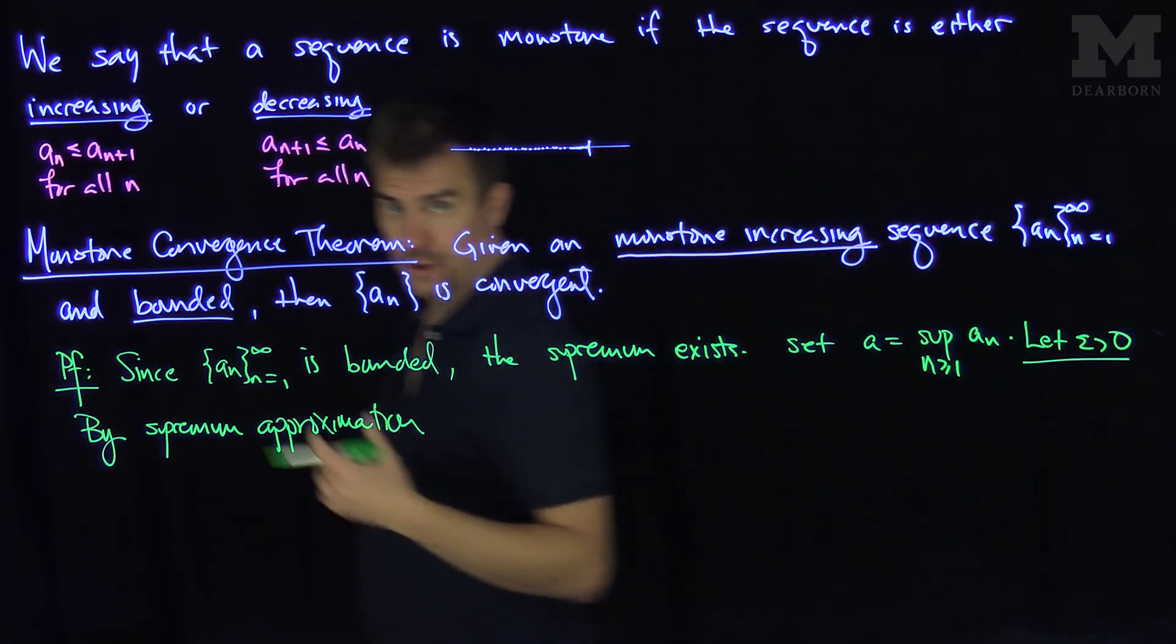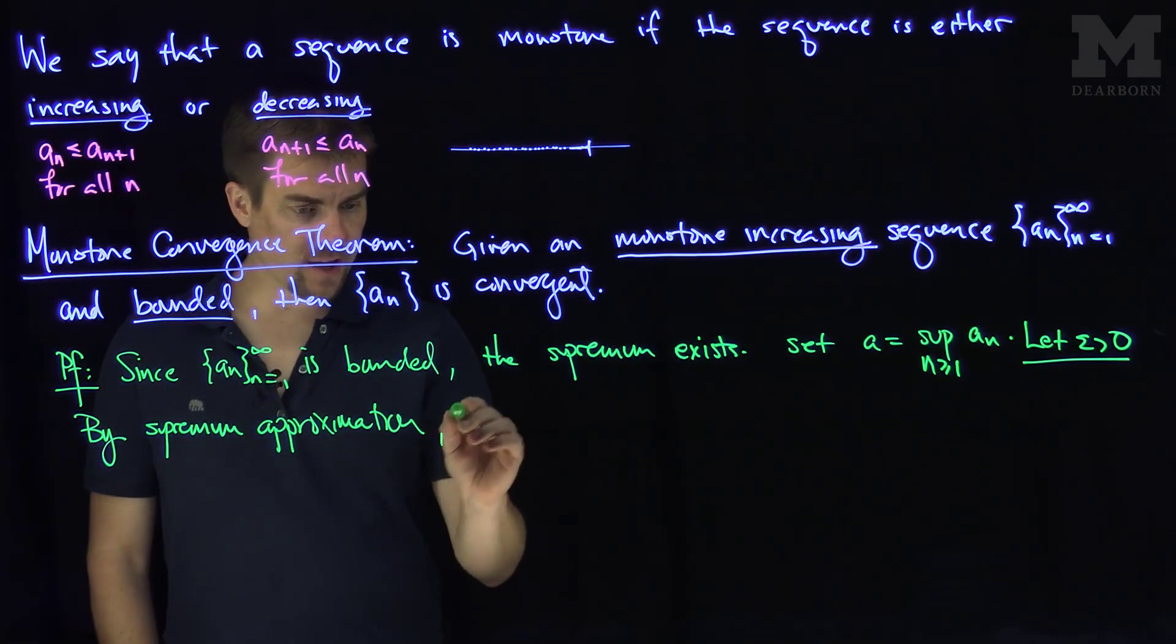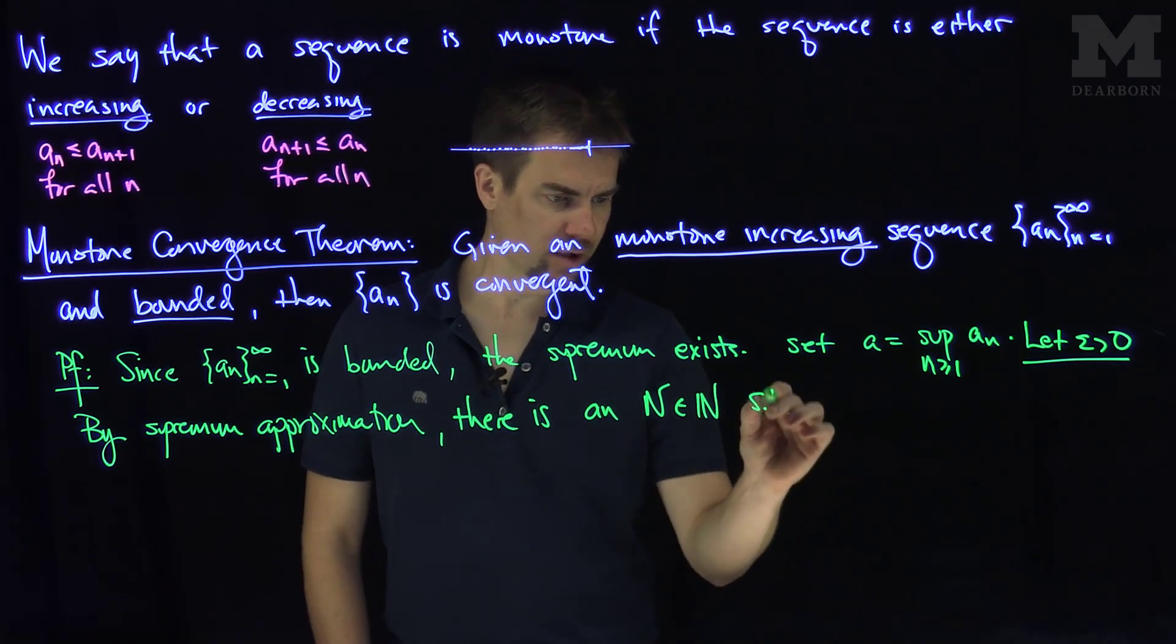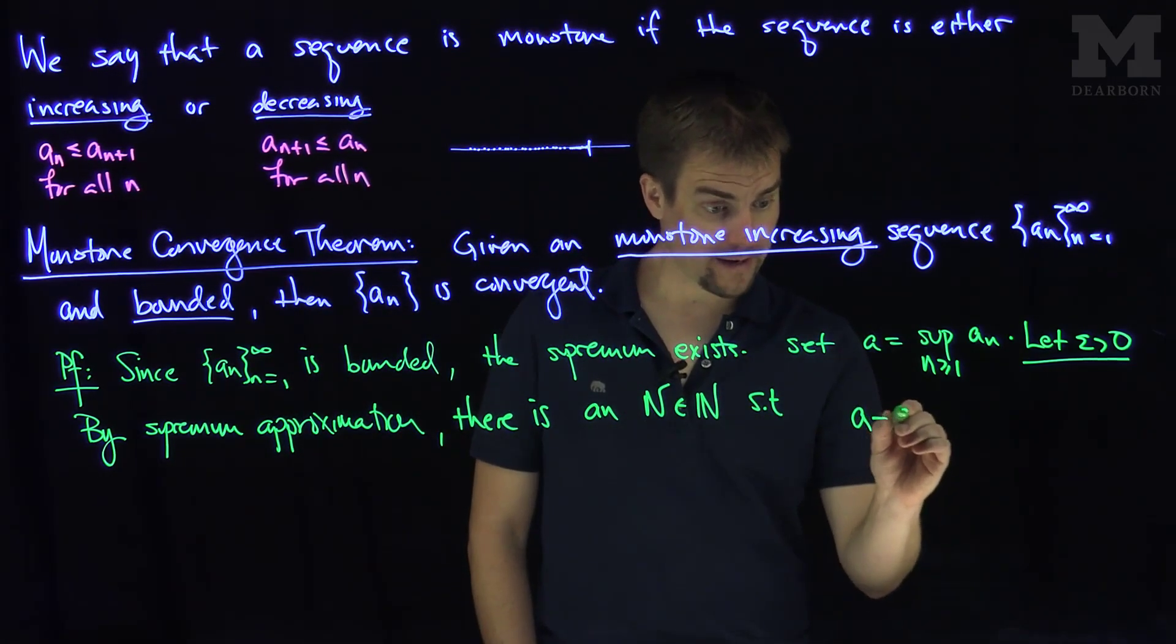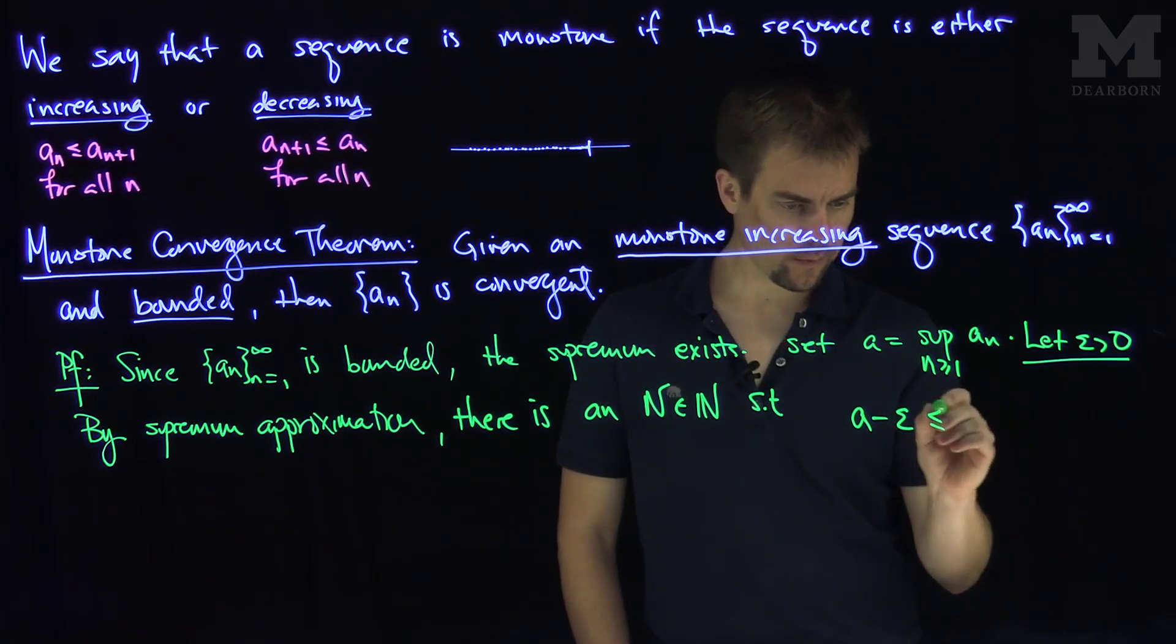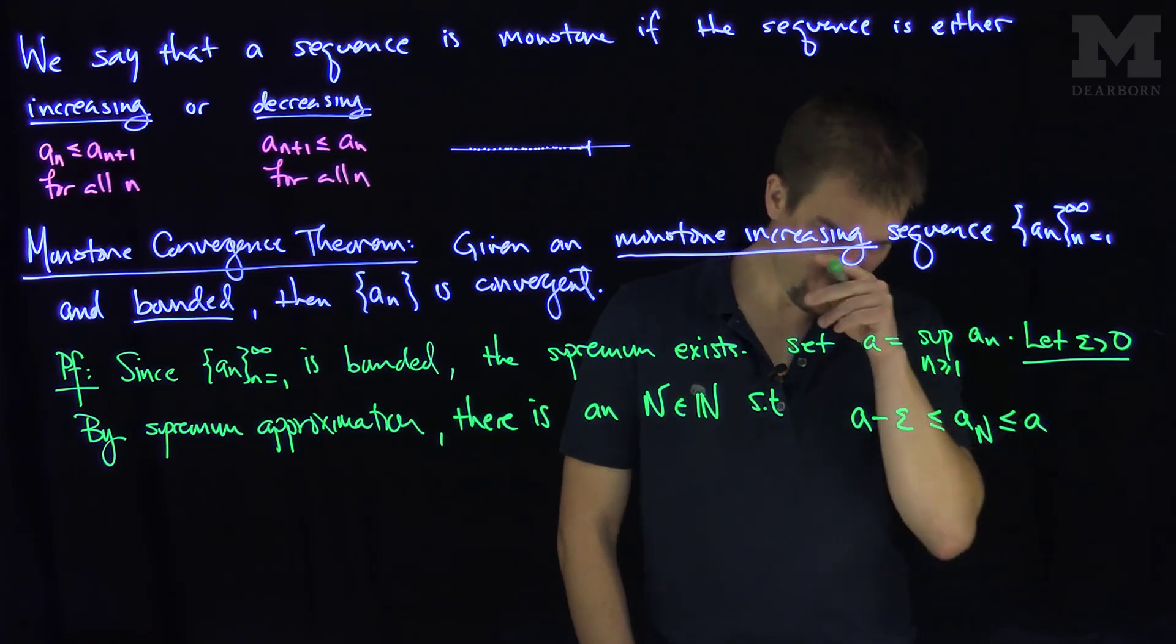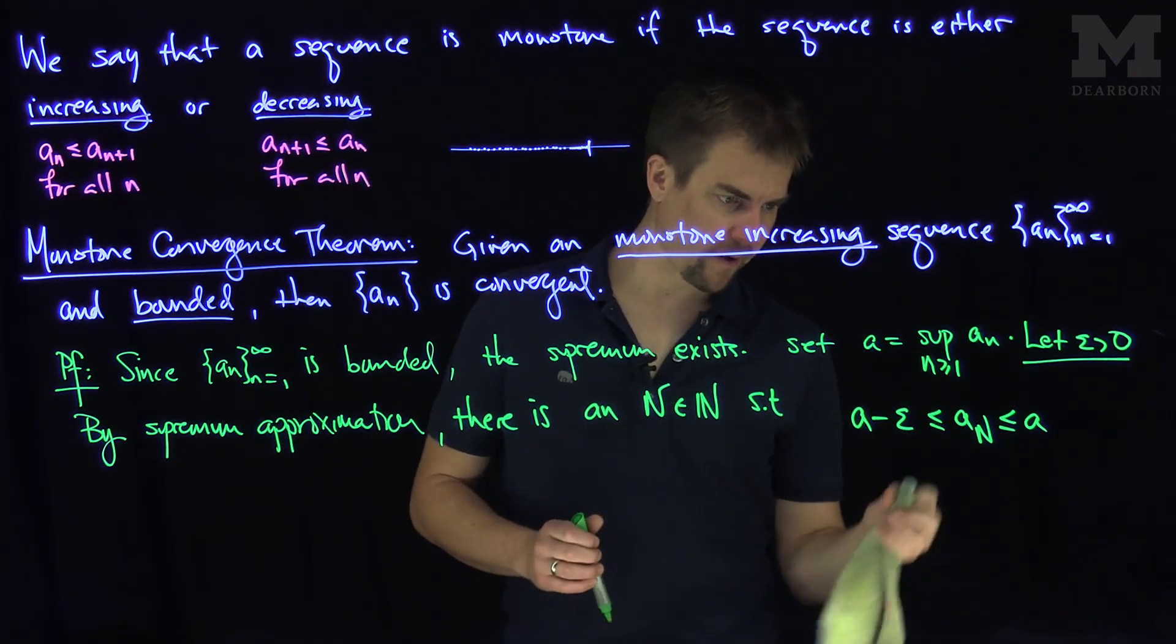Since epsilon is greater than zero, by supremum approximation there is an N such that the supremum minus epsilon is less than a_N, and that's less than or equal to a. We can make this a strict inequality.